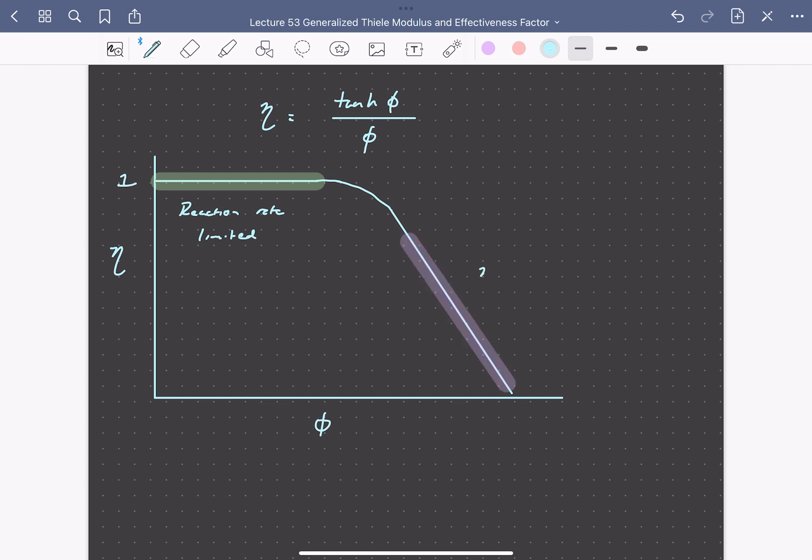So in this region here, the effectiveness factor goes as 1 over the Thiele modulus, and so here our reaction rate is limited by internal diffusion. So as we reduce rates of diffusion by increasing the Thiele modulus, our overall observed rate is going to decrease.